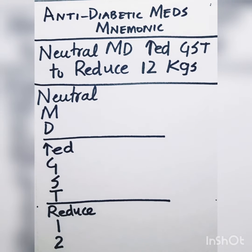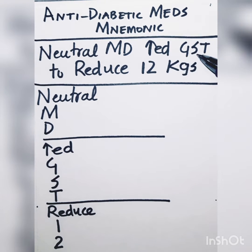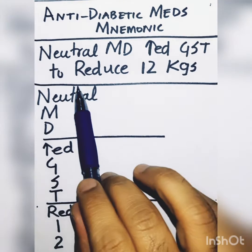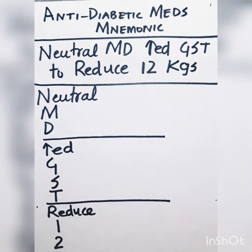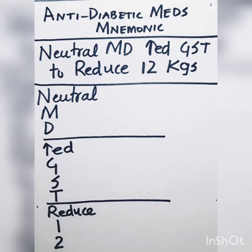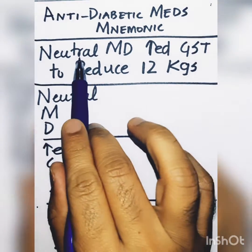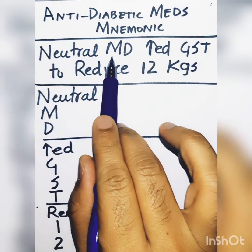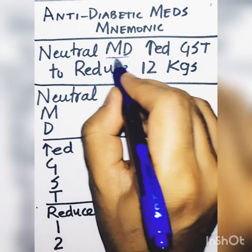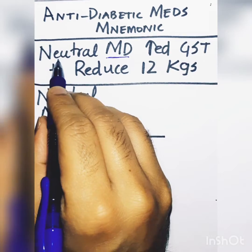An easy way to remember all the anti-diabetic medications is the mnemonic: 'Neutral MD increase the GST to reduce 12 kgs.' This helps you remember the anti-diabetic medications and their effect on weight. The 'Neutral MD' part refers to two medications that are weight neutral.